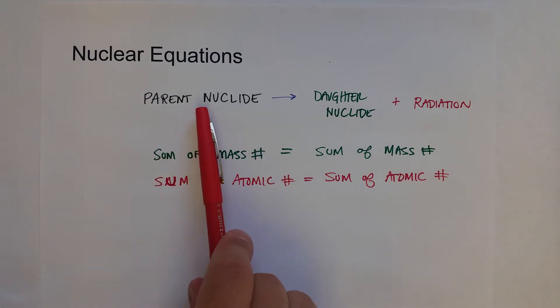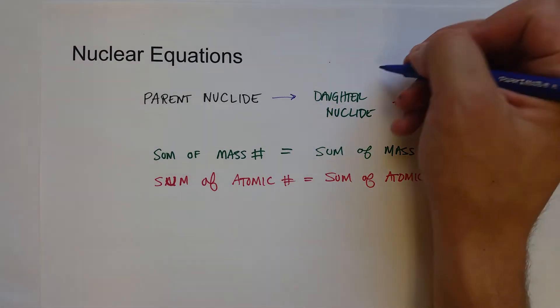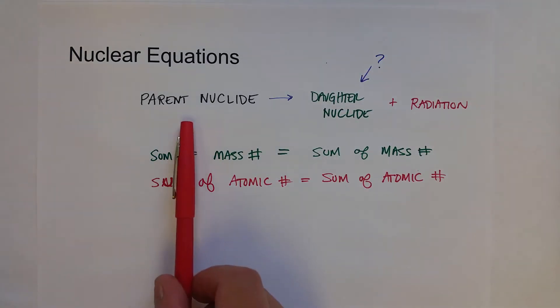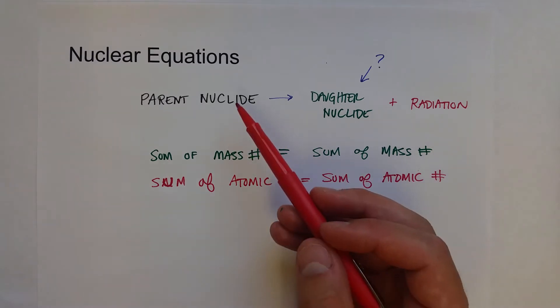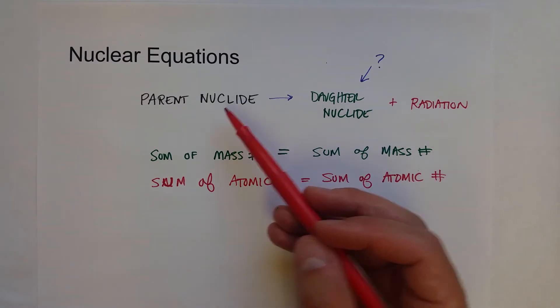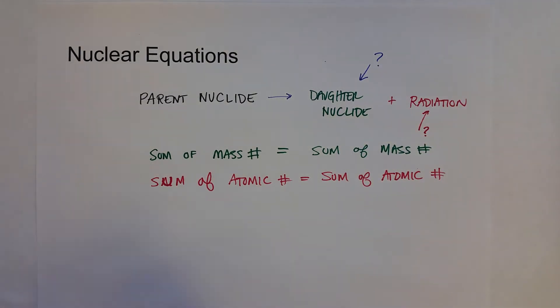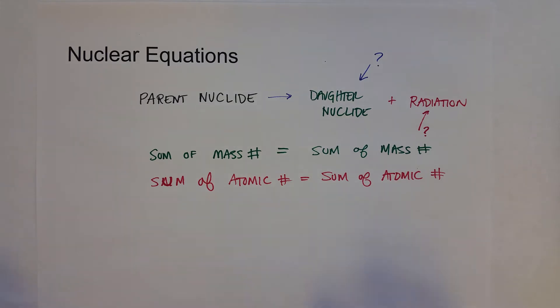Say, for instance, that we know the parent nuclide and we know what type of radiation it emits, we could answer the question of what daughter nuclide is produced. Or, just like any equation, if you know most of the variables, you can always solve for one. For instance, if we know the parent nuclide and we know what daughter isotope was produced, we could answer the question about what type of radiation is being produced in this nuclear equation. So, let's take a look at a few examples and see this.